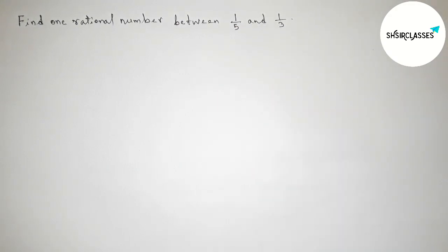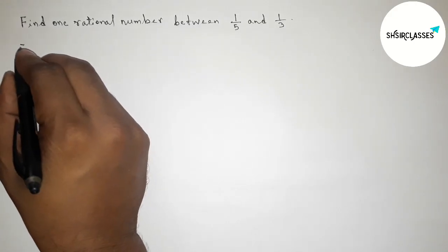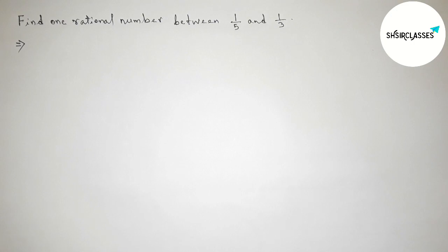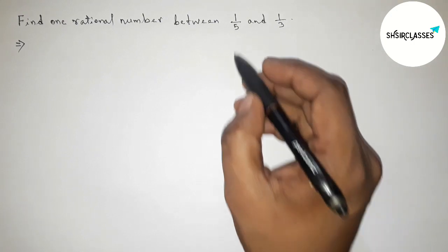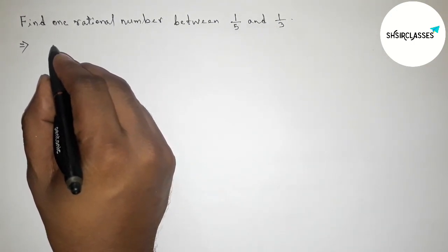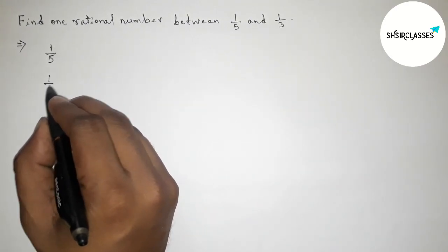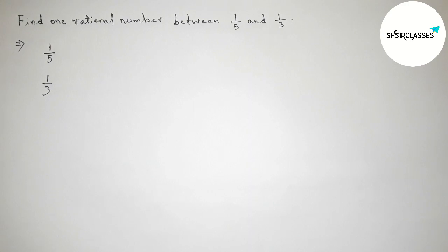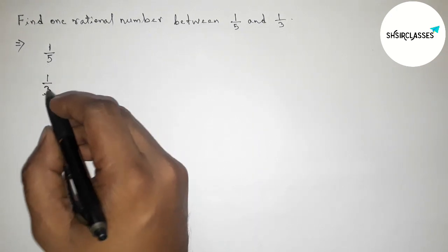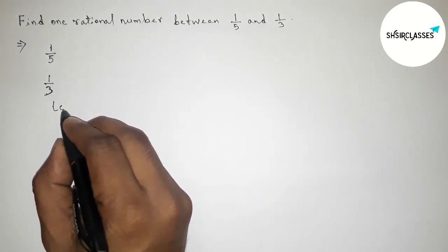First of all, let us solve this problem. Here are given two rational numbers: 1/5, so first write down here 1/5, then given another 1/3. Here both the denominators are not equal, so we have to make equal denominators.